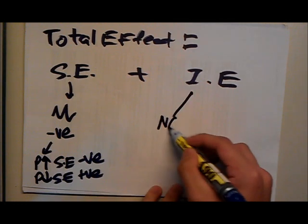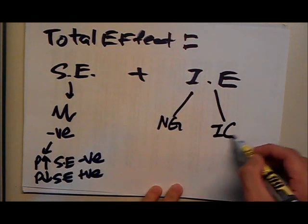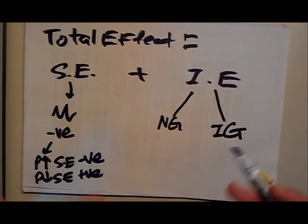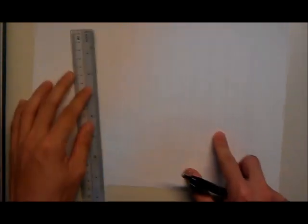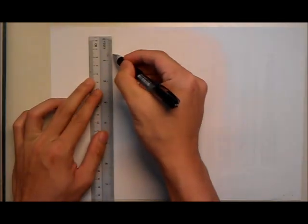By looking at the income effect, we can identify the type of good we are looking at. Now let's draw the graph. We shall be using the Hicksian definition of real income, which is in terms of utility. I'll go through step by step on how to draw this graph.